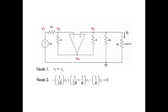Now let's examine node 2. At this node, we may write by inspection that we have the node voltage equation minus 1 over 2R times the node voltage V1 plus the node voltage V2 times the quantity 1 over 2R plus 1 over R minus 1 over R times the node voltage V4 equaling 0 because there are no current sources attached to node 2.